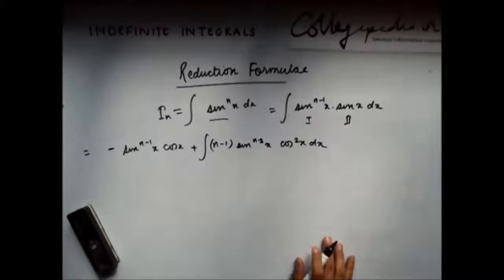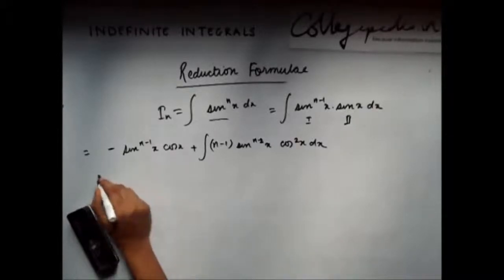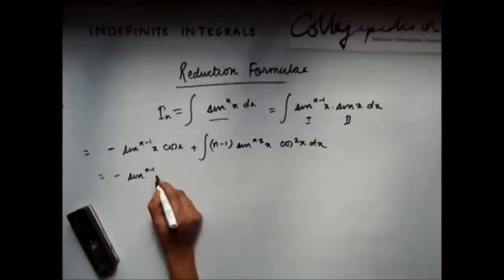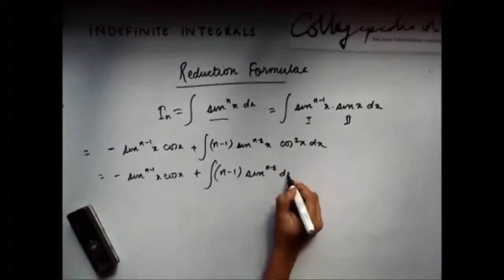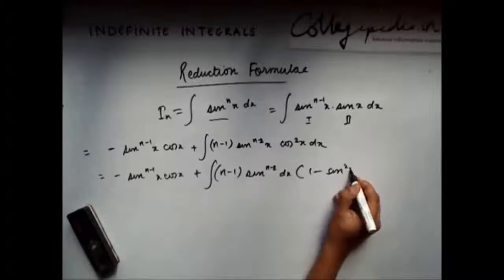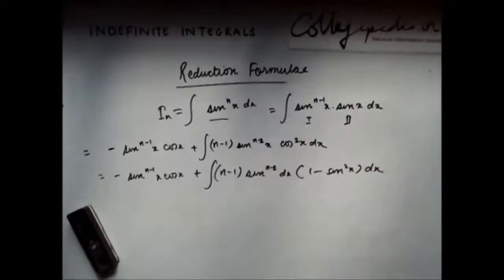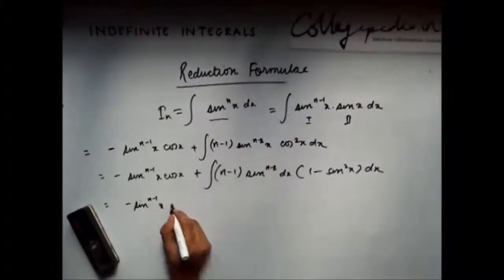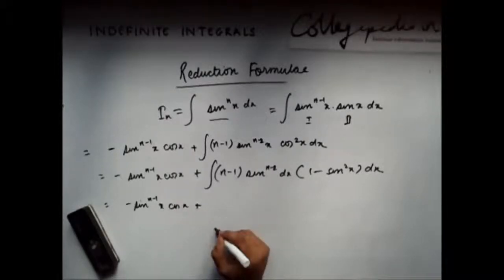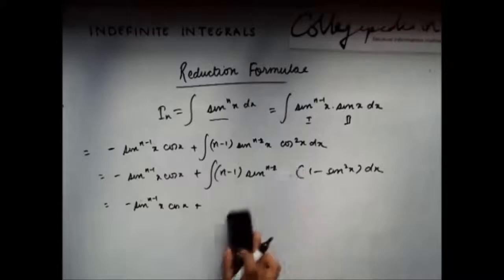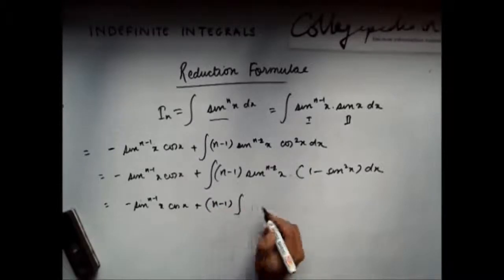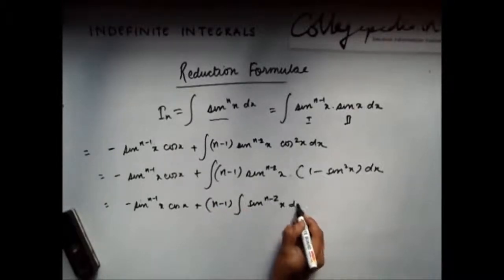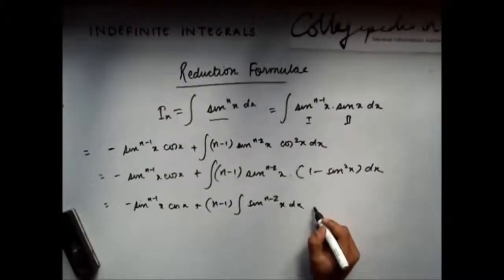Now, cos²(x) I can write it as 1 minus sin²(x). So this gets converted into minus sin^(n−1)(x)cos(x) plus (n−1) times the integration of sin^(n−2)(x) dx minus (n−1) times the integration of sin^n(x) dx.